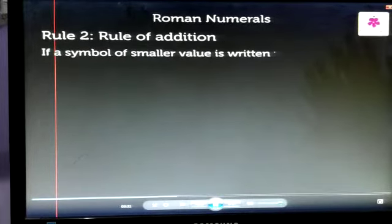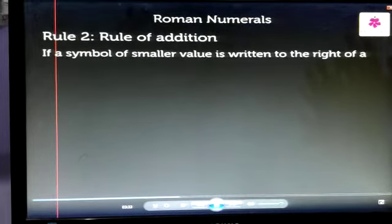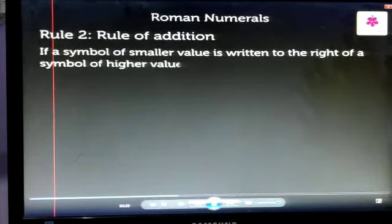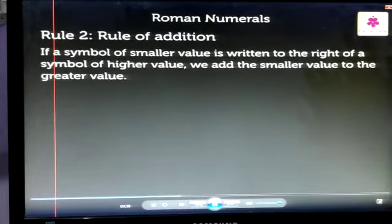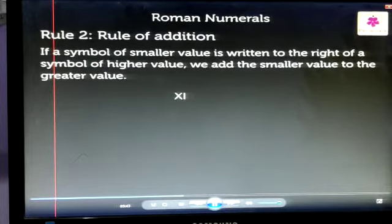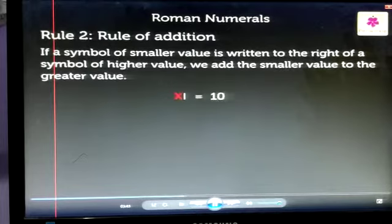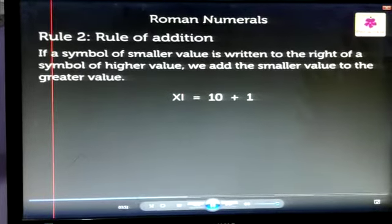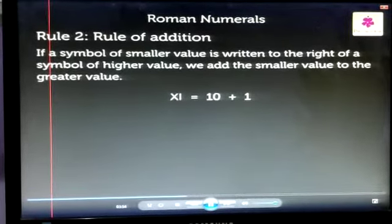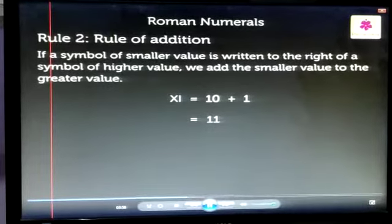If a symbol of smaller value is written to the right of a symbol of higher value, we add the smaller value to the greater value. Let us consider XI. X has a value of 10. I has a value of 1. So, the Hindu Arabic number for this Roman number is 11.